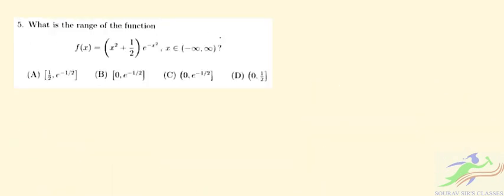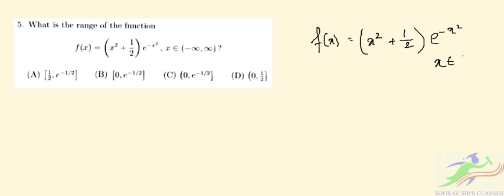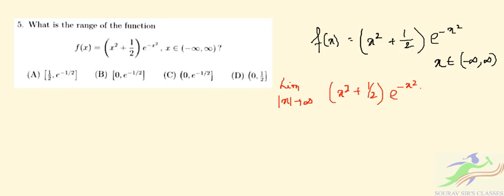Question number 5 asks us to find the range of the function f(x) = (x² + 1/2)e^(−x²), where x ∈ (−∞, +∞). Taking the limit as |x| → ∞, we get (x² + 1/2)e^(−x²) → 0.